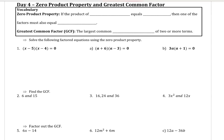Unit 10, Day 4: Zero Product Property and Greatest Common Factor. The zero product property states that if the product of two factors equals zero, then one of the factors must also equal zero.